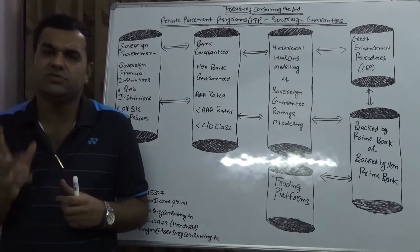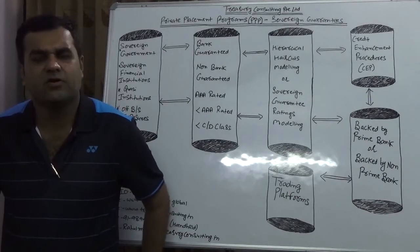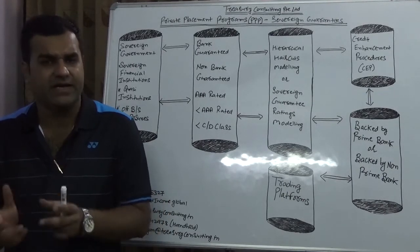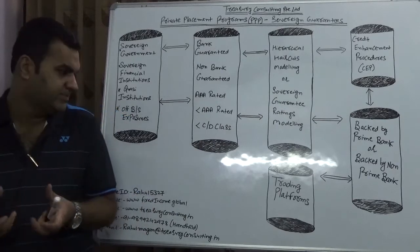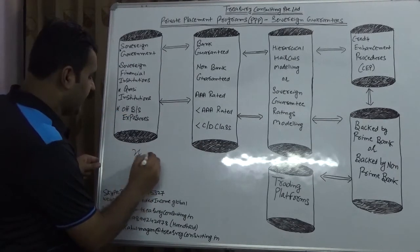They are not interested in MTNs also, but to an extent we saw they do have little bit interest in MTNs also. So you first need to see what kind of Sovereign Guarantee do you have. Second important aspect of a Sovereign Guarantee is the credit rating. For example, there are two participants, let me write here.